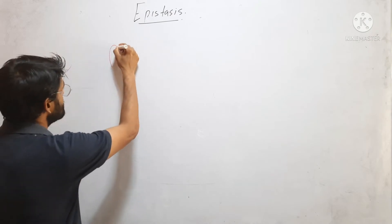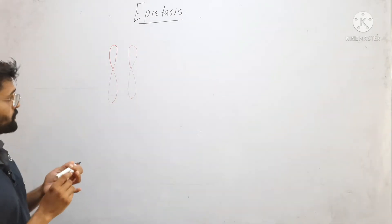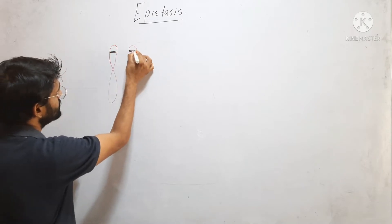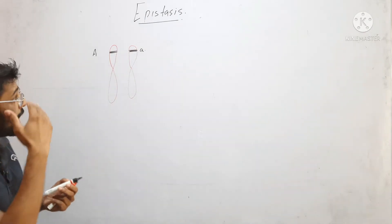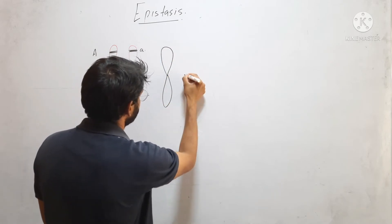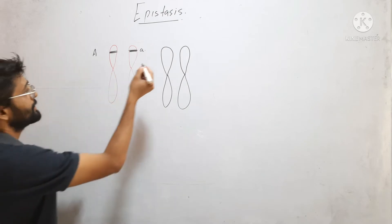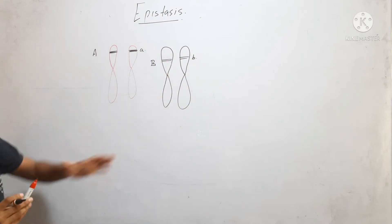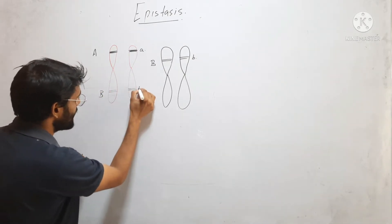For example, this is a chromosome, and on this chromosome there is a gene — capital A and small a. And on another chromosome, there is a gene that is B. Or it may be present at a different locus of the same chromosome.